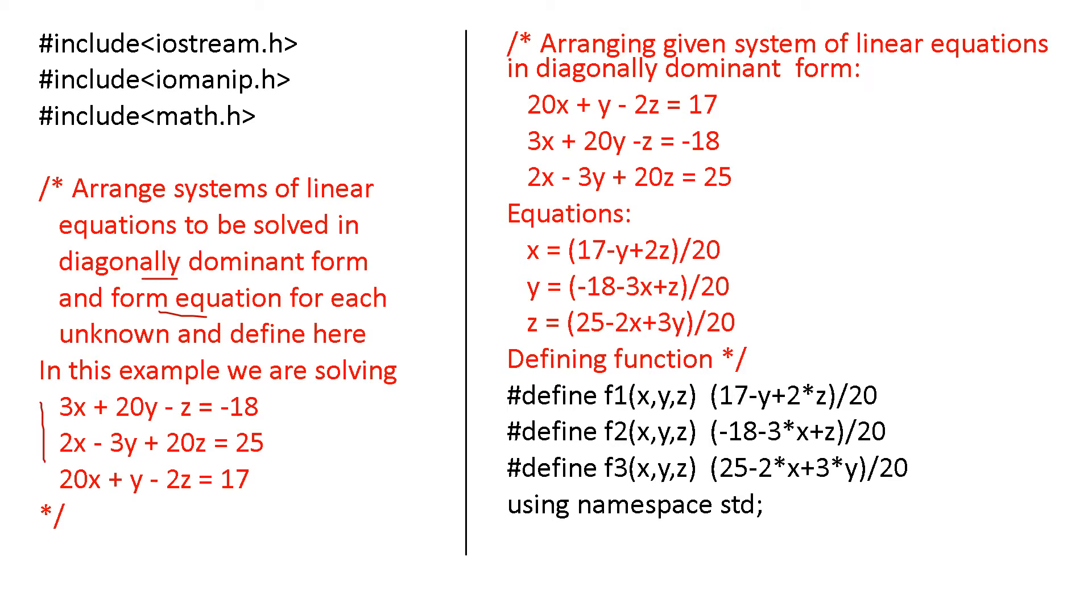Here, in the program, the question is given: 3x plus 20y minus z equals minus 18, 2x minus 3y plus 20z equals 25, 20x plus y minus 2z equals 17. Now, it has been arranged to make it diagonally dominant. You got the equation values as x, y, and z. Now, come to the program.